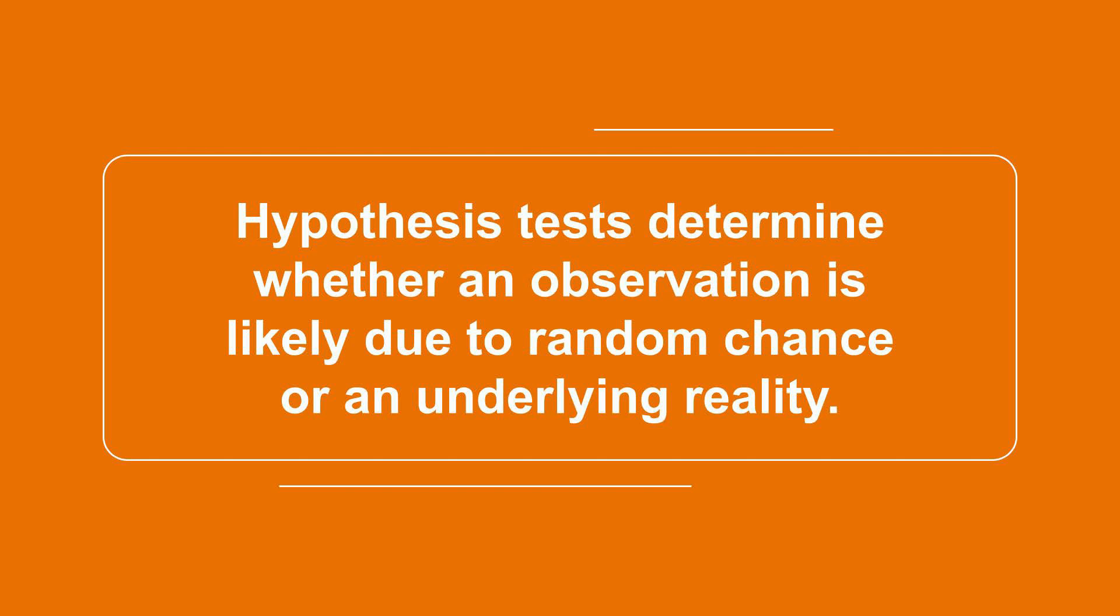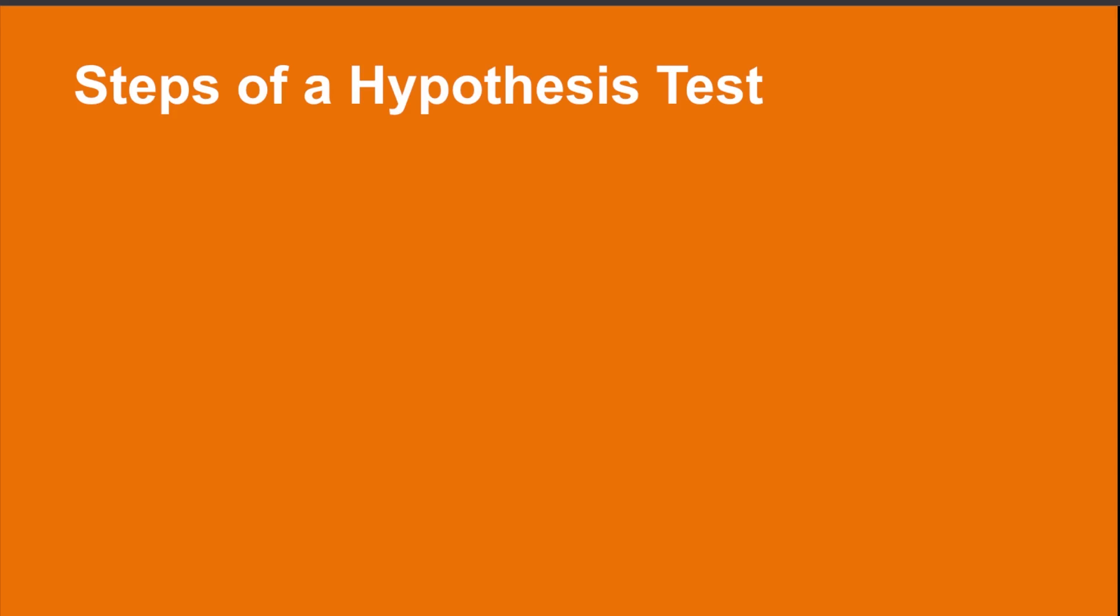A hypothesis test starts from the fundamental premise that any observation might be due to random chance, and that the statistician must prove that the observation is meaningful. A hypothesis test consists, in general, of five stages. In the first stage, we construct the null and alternative hypotheses.